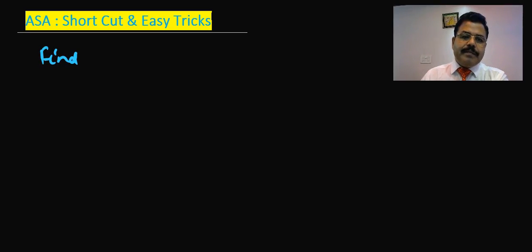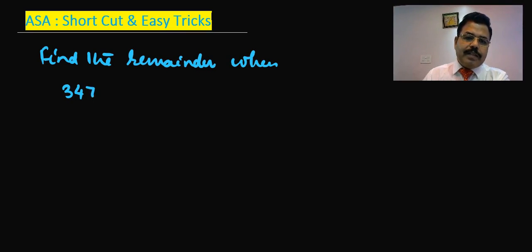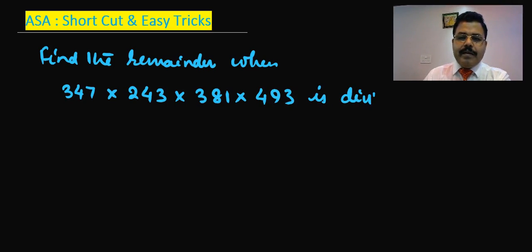Find the remainder when 347 multiply by 243 multiply by 381 multiply by 493 is divided by 7.